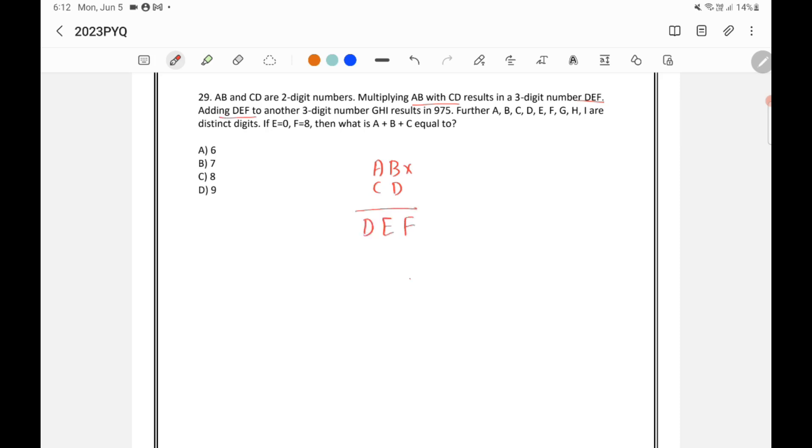Adding DEF to another three digit number GHI, so DEF plus GHI you will get 975. Further it is said that A, B, C, D, E, F, G, H and I are distinct digits. So this is important because they are different digits. I cannot use the same digit for more than one alphabet given here.